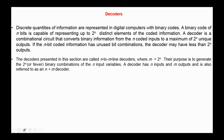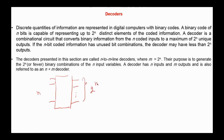Next, we move to decoders. A decoder is a combinational logic circuit with usually N inputs and a maximum of 2-to-the-power-N outputs. We say we have an N by 2^N decoder — for example, 2-to-4, 3-to-8, and 4-to-16 decoders.